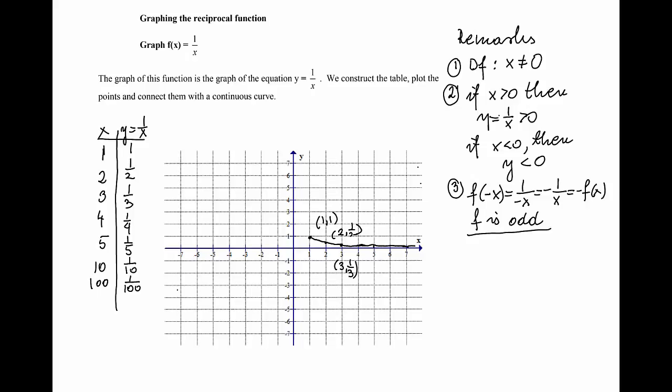Now what's happening for x's between 0 and 1? If I take 1/2, the reciprocal is going to be 2. If I take 1/3, the reciprocal is 3. If I take 1/10, the reciprocal is 10. So the smaller value of x, the closer to 0, the higher value of y. Therefore, the points are going to come closer and closer to the y-axis. And the graph, if I join those points, has this shape.